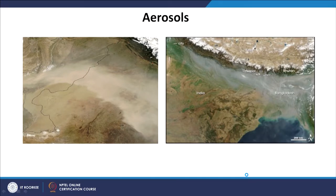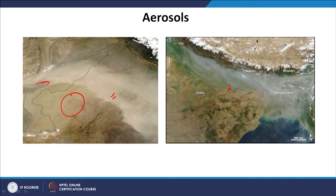Aerosols play an important role in deciding the temperature and the amount of radiation reaching the earth's surface. In a satellite picture, we can see an aerosol cloud over regions of Punjab and Haryana, with the origin seemingly from Iran — showing that aerosol clouds can come from far distances. Over the Gangetic plains of Uttar Pradesh, there is also a lot of haze due to aerosols, and these aerosol clouds will certainly affect solar radiation in a big way.